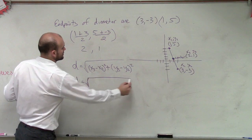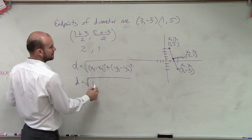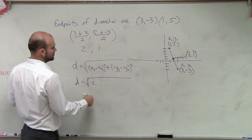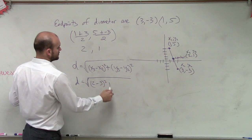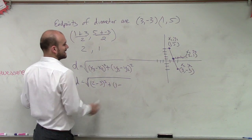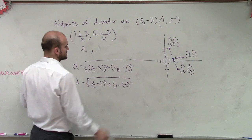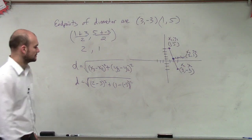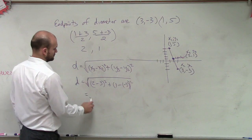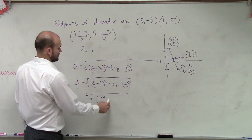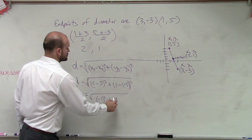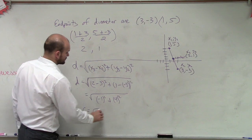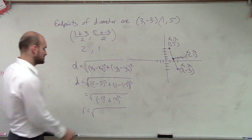So therefore, d equals the square root, x3 is going to be... I'm sorry, x3 is 2, minus x2, which is 3, squared, plus y3, which is 1, minus negative 3. Notice how I put it in parentheses. Can you just put it as plus 3? Yes, you could. 2 minus 3 is negative 1. 1 minus negative 3 is 4 squared. So therefore, my distance, which is actually equal to my radius, is equal to the square root of 1 plus 16, which is square root of 17.